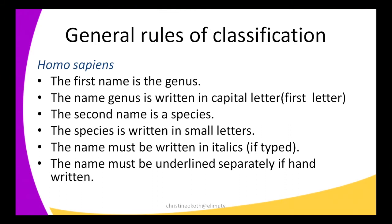Rule number three: the second name is a species — still looking at our example, sapiens is the species. Rule number four: the species name is written entirely in small letters — all the letters in sapiens are written in small letters. Rule number five: the name must be written in italics if typed. As in our example, it is typed and as you can observe, it is written in italics.